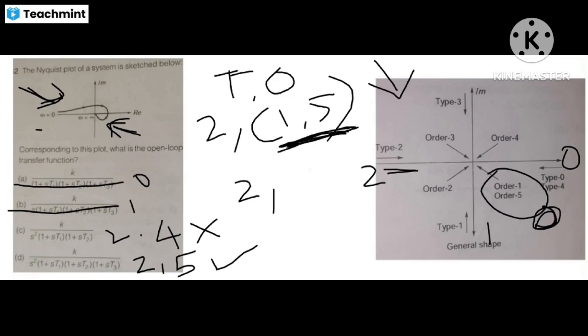We have a Nyquist plot — type 2, 5th order system. Type 1 already accounts for one, so counting 1, 2, 3, 4 gives a 4th order system. The required answer is the 5th order. To solve this problem directly using the right-hand side of the table, you have to memorize it. If you memorize it, it is easy to find out the answer.